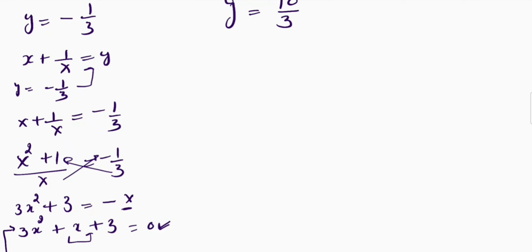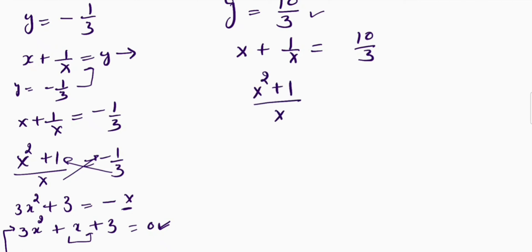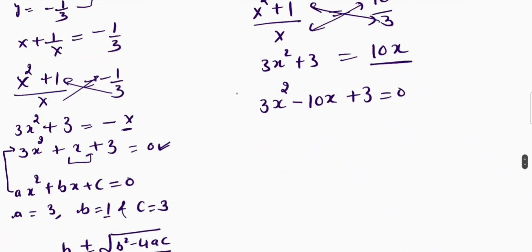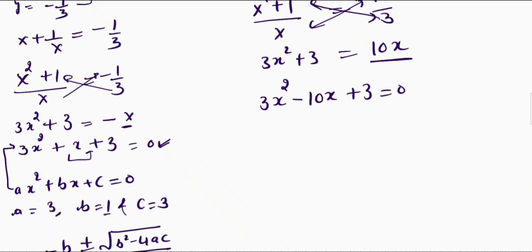Now I will put the value y equals 10 by 3 into the equation. So I get x plus 1 upon x equals 10 by 3. Taking LCM, I get x square plus 1 divided by x equals 10 by 3. Cross multiplying, I get 3x square plus 3 equals 10x. Taking 10x to the left-hand side, I get 3x square minus 10x plus 3 equals 0.